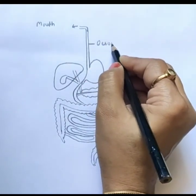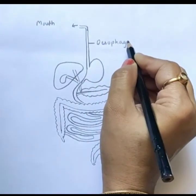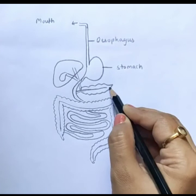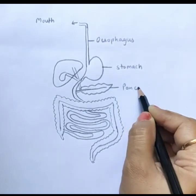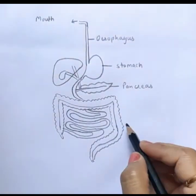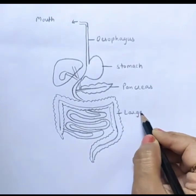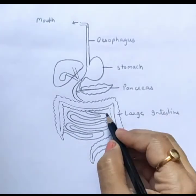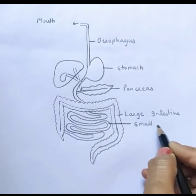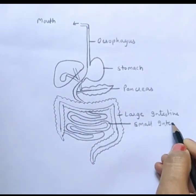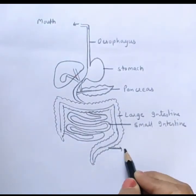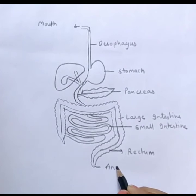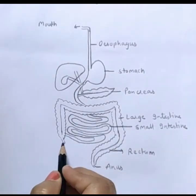Oesophagus. Stomach. Pancreas. Large intestine. This is the small intestine. Rectum. Anus. This is the appendix.